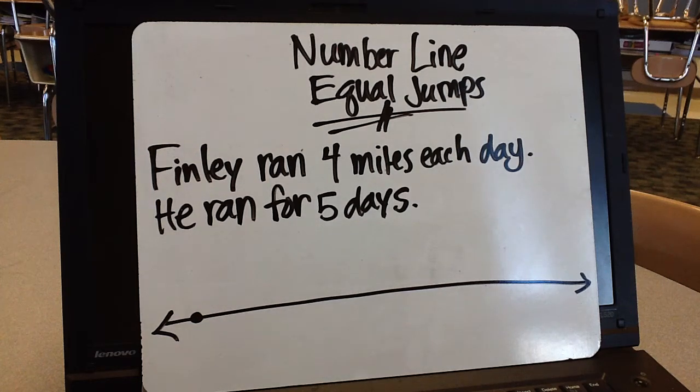Today we're going to show how to use the number line when making equal jumps, and this is a way for students to be able to multiply. The only thing here is that each number that we're multiplying has to be the same each time, so as I explain it, you'll see what I mean.